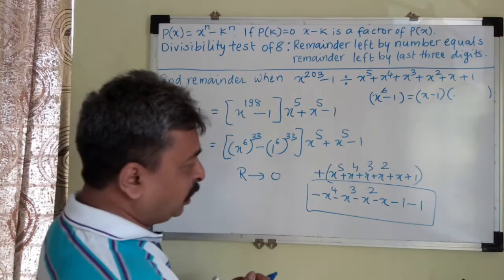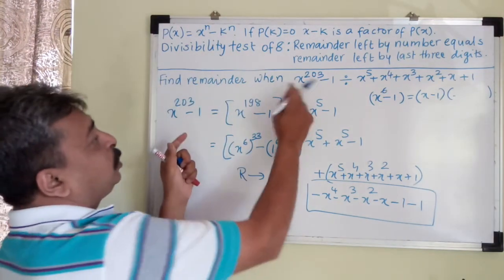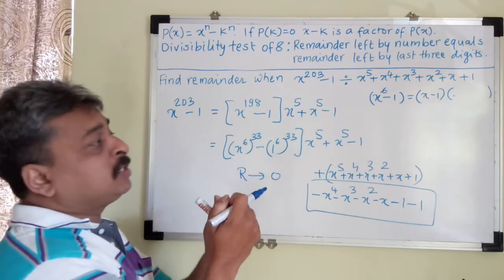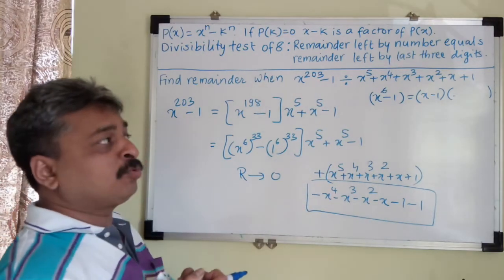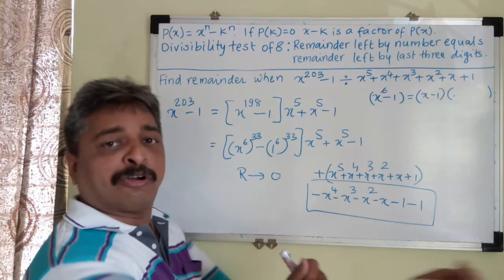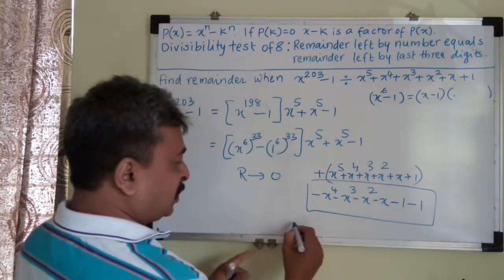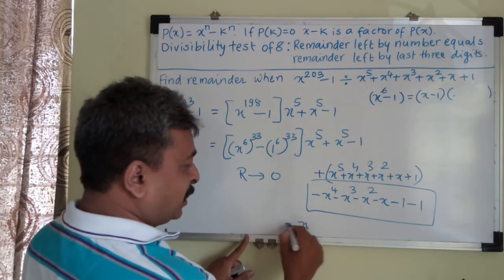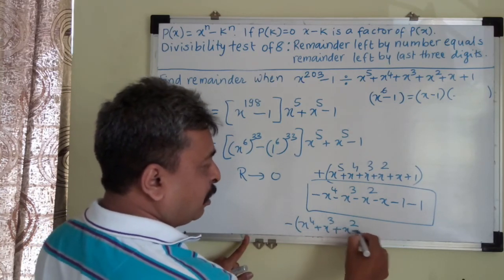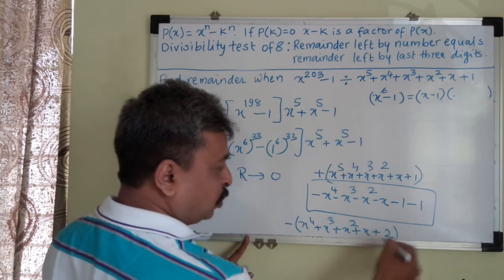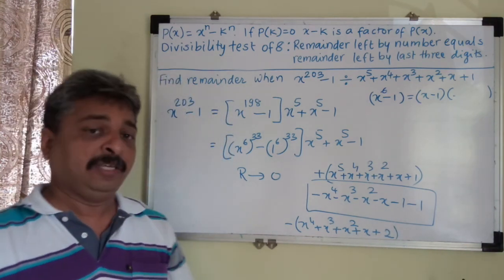Hence I can conclude that the remainder left by x raised to 203 minus 1 when divided by x raised to 5 plus x raised to 4 plus x squared and so on plus 1, is equal to negative of (x raised to 4 plus x cubed plus x squared plus x plus 2). I hope you have enjoyed this explanation. Thank you.